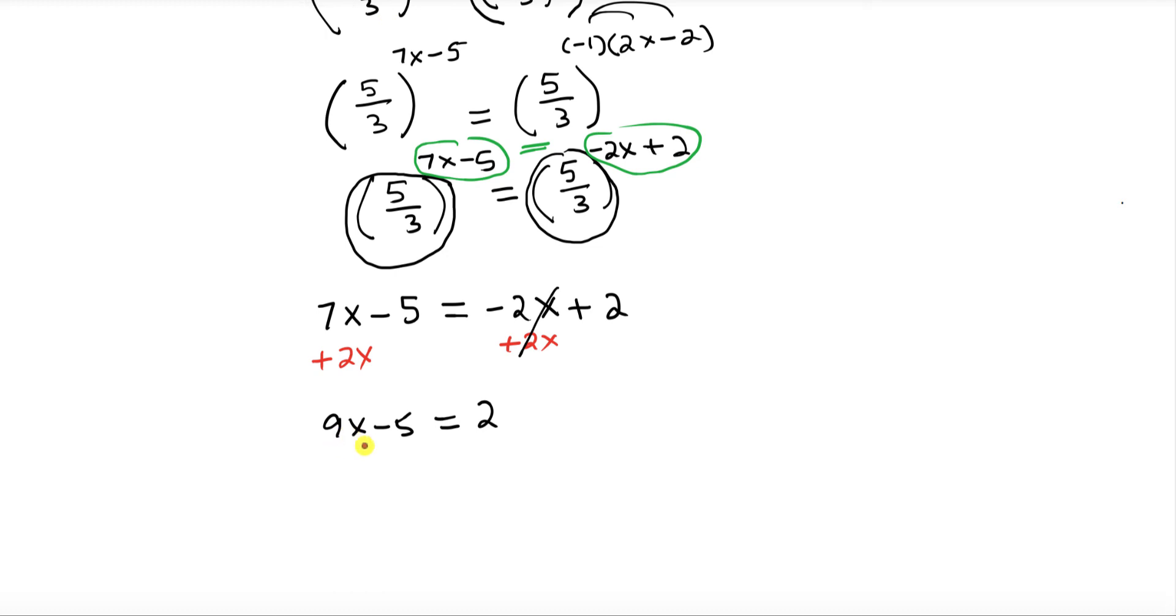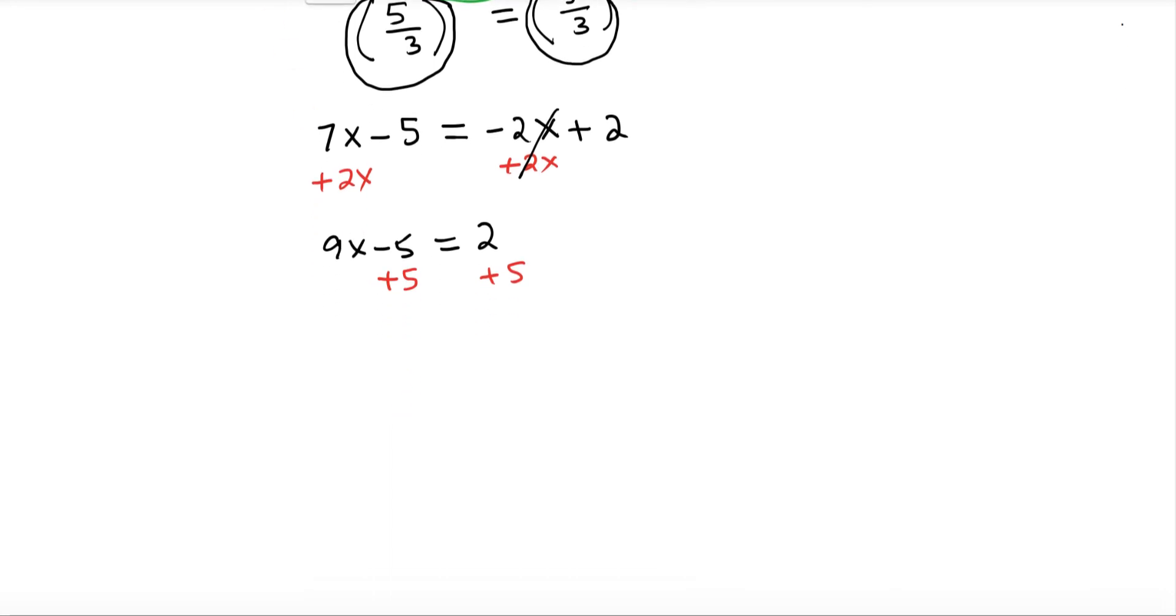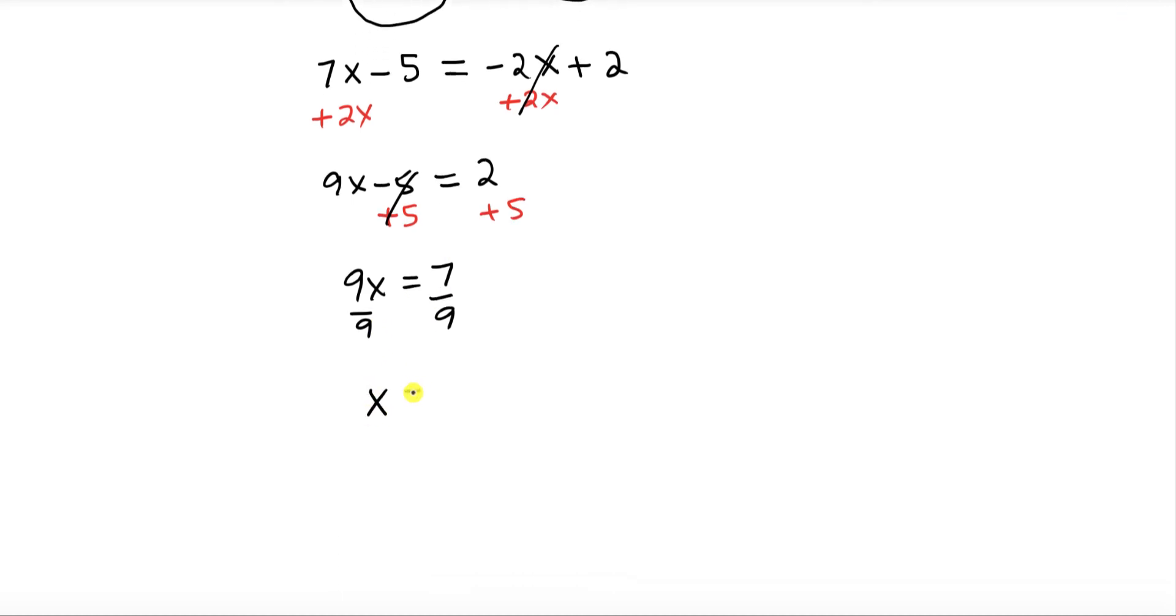Add 5 to both sides. This is gone - we got 9x equals 7. Divide both sides by 9. So x turns out to be 7 over 9 as our solution. Thanks for watching and please subscribe to my channel for more exciting videos.